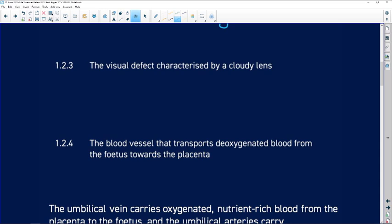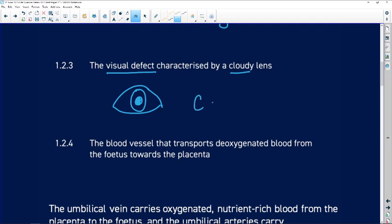The visual defect characterized by a cloudy lens. So when you look at the eye and you look through the pupil of the eye, if that lens becomes clouded or cloudy, we see that the pupil does not look black. It looks like it's milky or cloudy. What do we call that visual defect? It is a cataract.